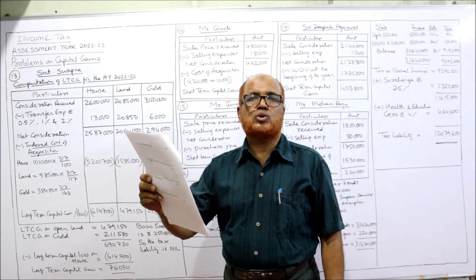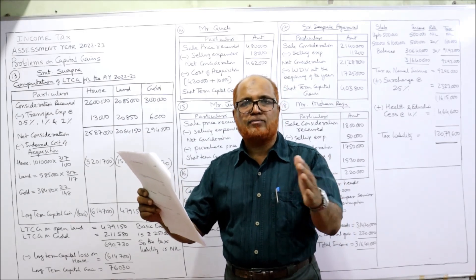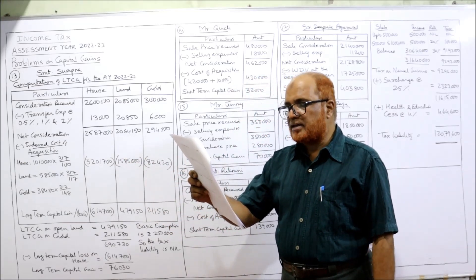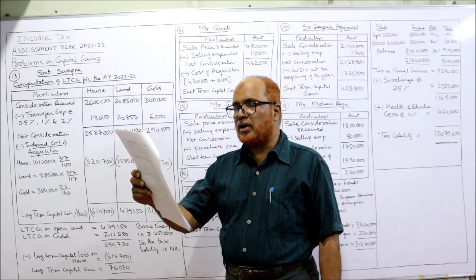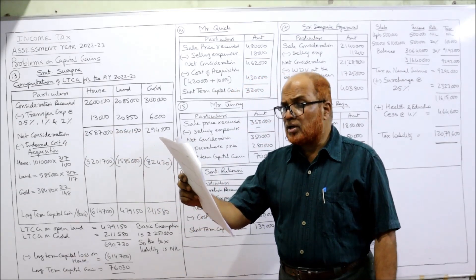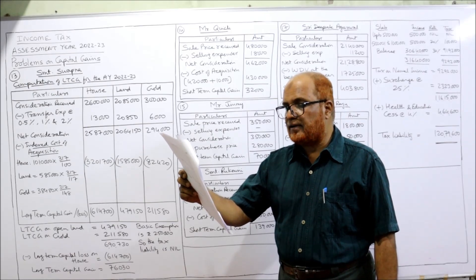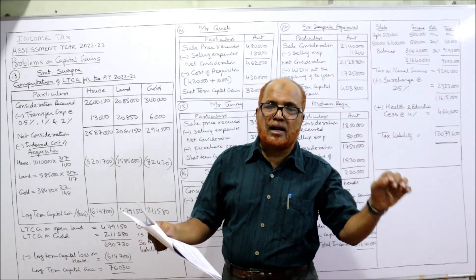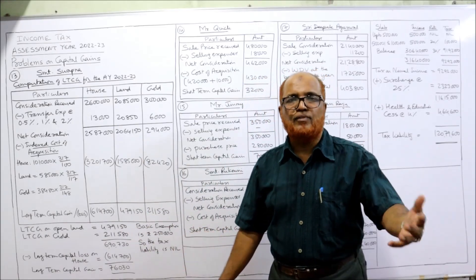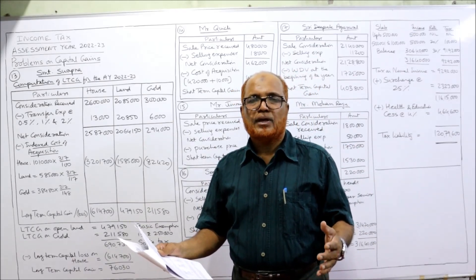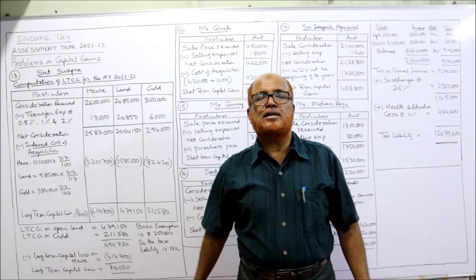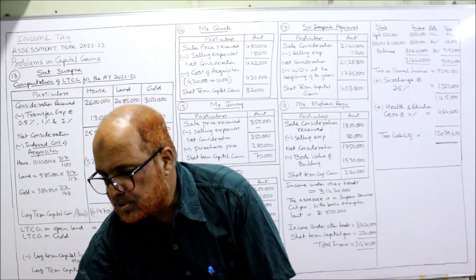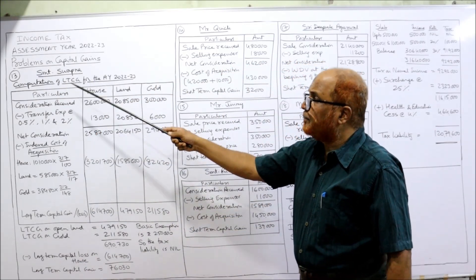Date of sale is 13th January 2022 — our current previous year is 2021-22, so all three assets are sold during the current previous year. Sale prices and transfer expenses are given: 0.5%, 1%, and 2% respectively. Cost Inflation Index for 2005-06 is 117 and for 2009-10 is 148. The index for the current previous year 2021-22 is not given in the problem — you must remember that the CII for 2021-22 is 317.